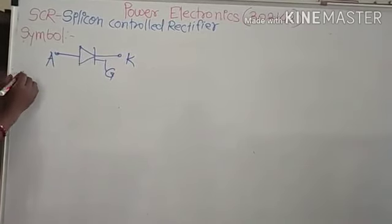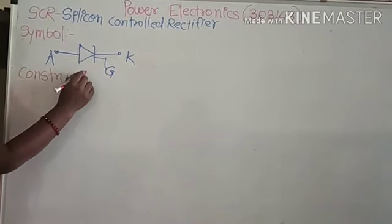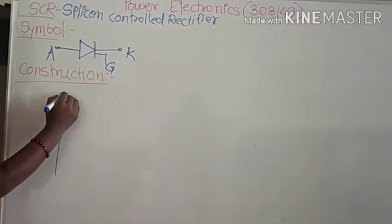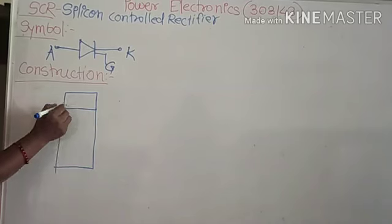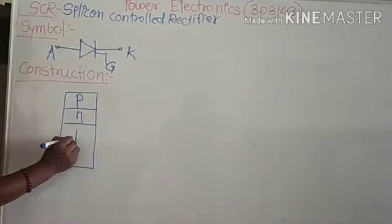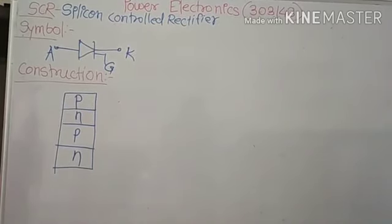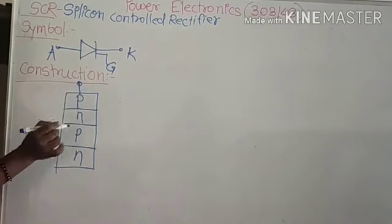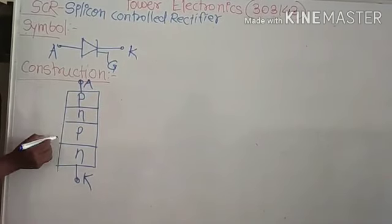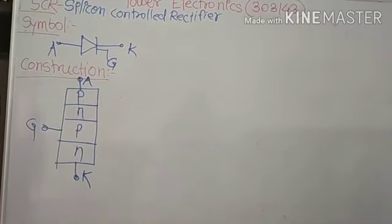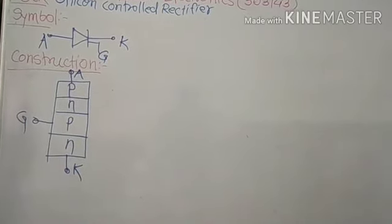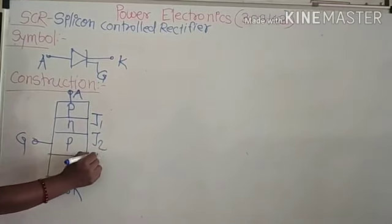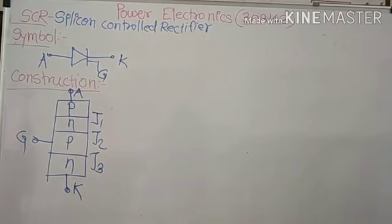The next point is the construction of SCR. SCR is a four-layer structure with alternating P and N layers: P, N, P, N. I will draw the construction diagram. It has three terminals: anode, cathode, and gate, and this construction is a vertically-oriented structure. It also has three junctions: junction J1, junction J2, and junction J3.